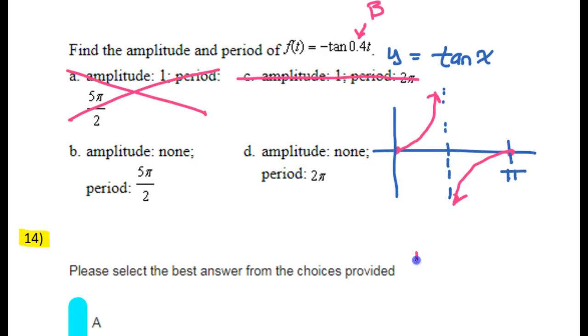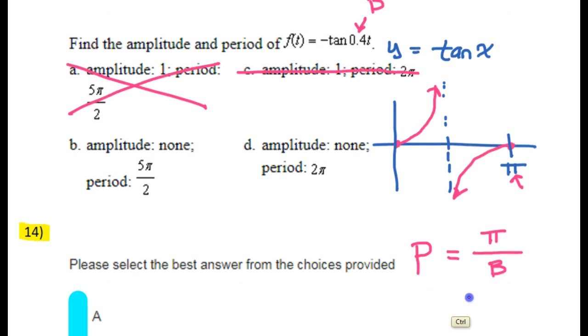So this is the b value whenever you have a number inside the function like this. Here is the formula for period. Write this down if you don't already have it memorized. The period is always going to be the normal period divided by the b value. So since tangent usually has a period of pi, then the new period will be pi divided by the b value. So that means the period should be pi divided by 0.4.